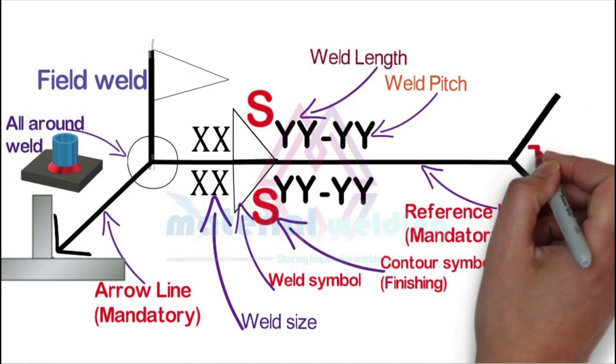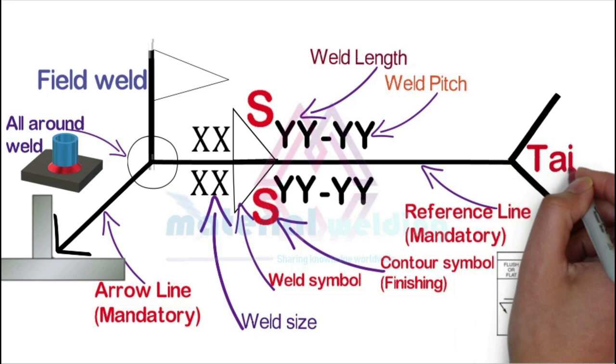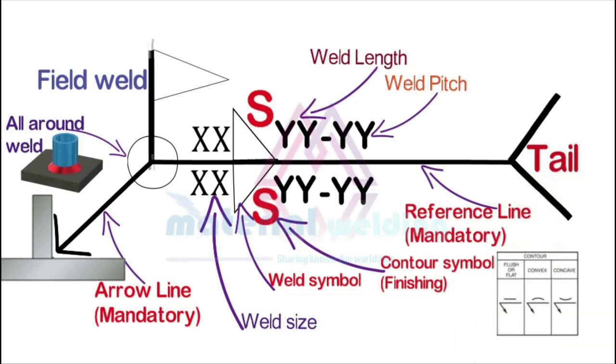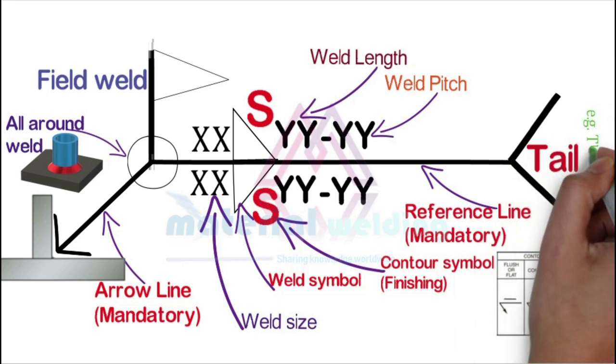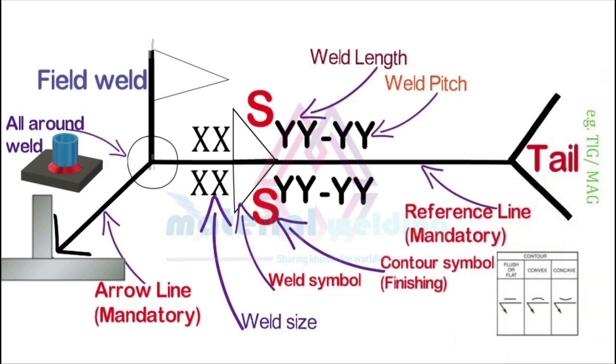The tail part of the welding symbol provides additional information for the welding, such as the welding process to be used, specific materials, or any special process.